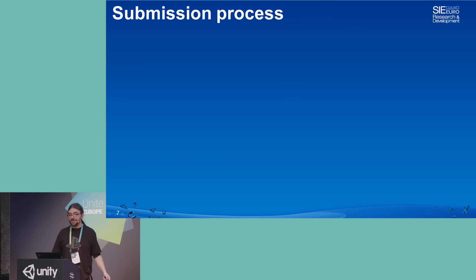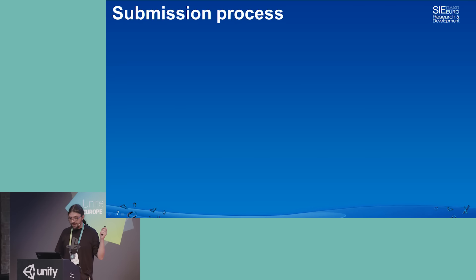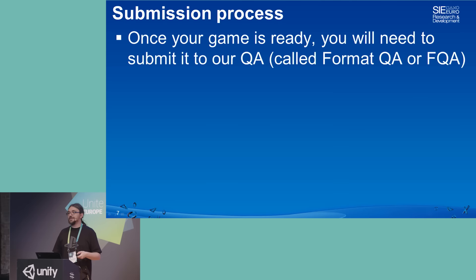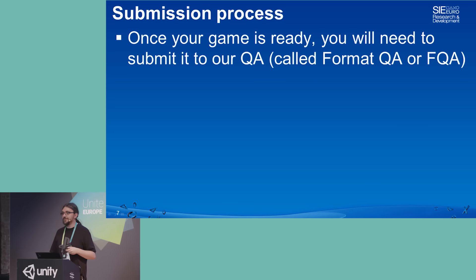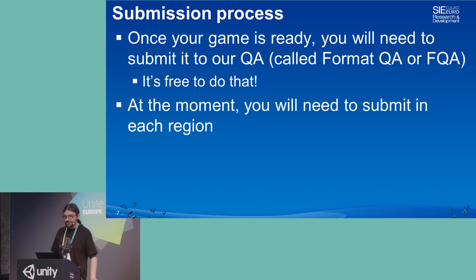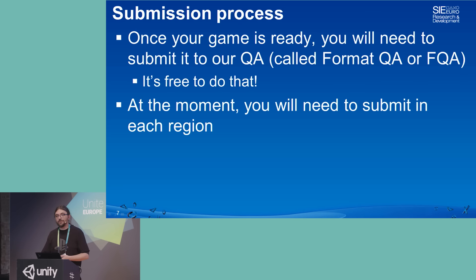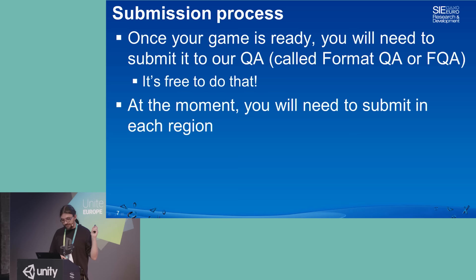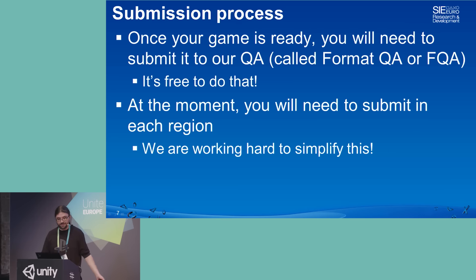Once you've finished your game, we have a submission process. You submit it to our QA team, called FormaQA or FQA for friends. It's free. You will need to submit to three or four different queues for each region you want to publish in — so if you want to publish in Europe and the US, you submit to each separately. We're working hard to simplify this, but it's taking quite some time.